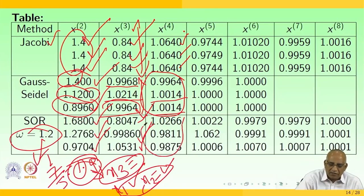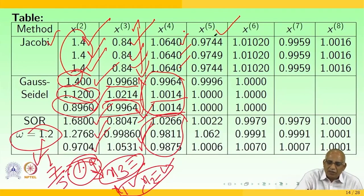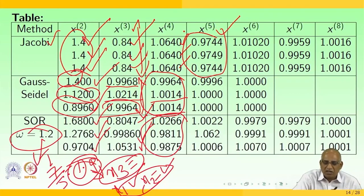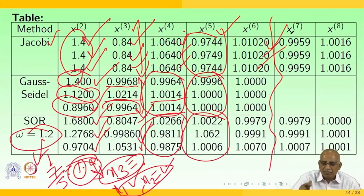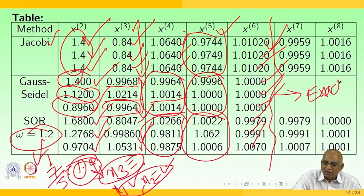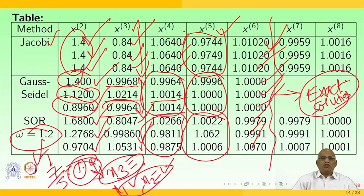Continuing the iterations: after 5-6 iterations using Gauss-Jacobi, Gauss-Seidel, and successive over-relaxation methods, all three converge to the exact solution [1, 1, 1]. After 6 iterations, x1, x2, x3 reach the exact solution. This demonstrates the power of Jacobi, Gauss-Seidel, and successive over-relaxation methods.